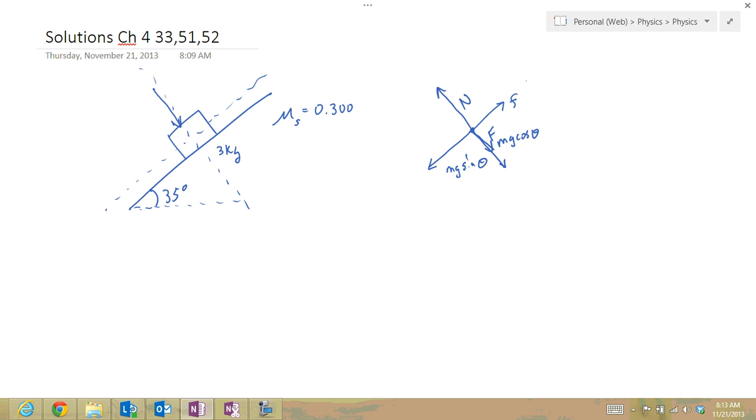I can now do sum of the forces in the x direction and sum of the forces in the y direction. These are the x prime, y prime directions, really. So sum of the forces in the x direction, I'm going to call down the plane positive. So I have mg sine theta minus the friction force has to equal 0.